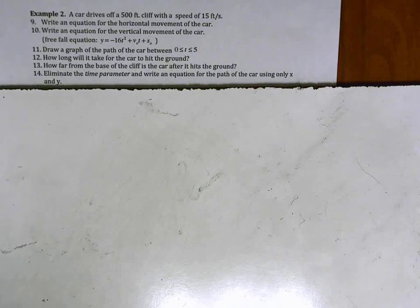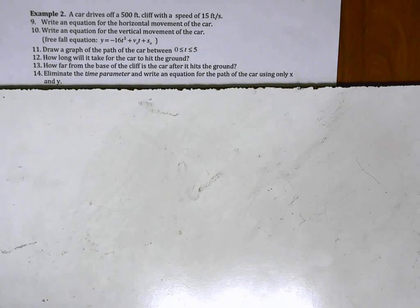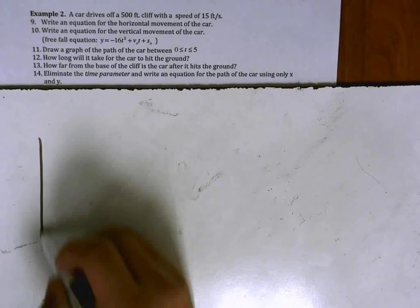So it says that a car drives off a cliff that's 500 feet and the speed that the car drives off the cliff is 15 feet per second. Our first question here, which is number 9 on the worksheet, we want to write an equation for the horizontal movement of the car. Before we get going too far here I'm going to start out with a picture of the situation.